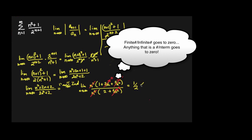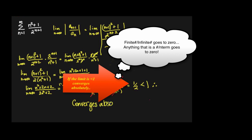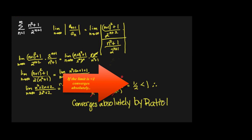Less than one. So it converges absolutely. But if you only wrote that, you would only get partial credit. You have to write: by ratio test.